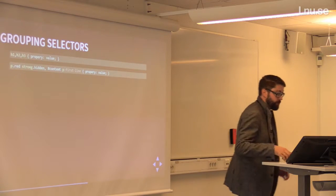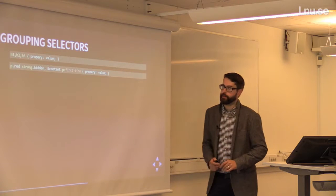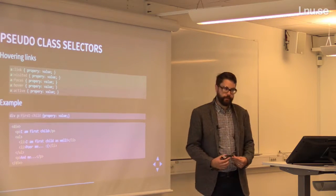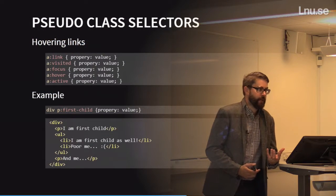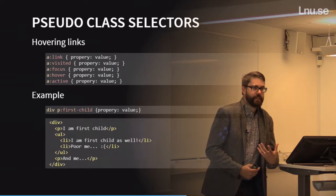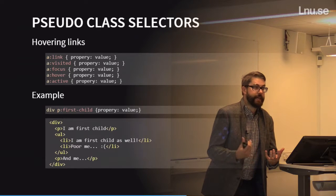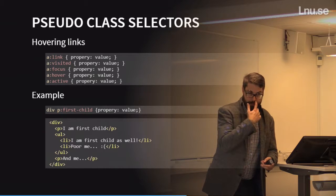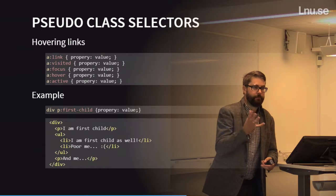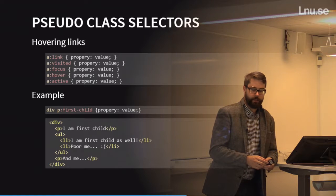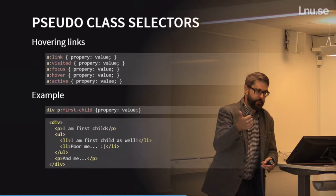This is done using media queries. You add a media attribute to a link tag specifying, for example, max-width: 800px — so this CSS file only applies when the window is 800 pixels wide or less. Above 800 pixels, the stylesheet is no longer in effect. You can also use the @media directive inside a CSS file with curly braces: everything inside that @media block applies for the specified condition, like max-width: 600px. You don't need separate files — you can put everything in one file.